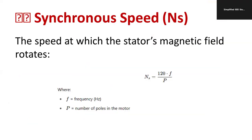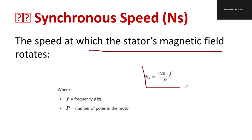Synchronous speed is the speed of the stator magnetic field. The formula is: Ns = 120f/p, where f is the supply frequency and p is the number of poles.